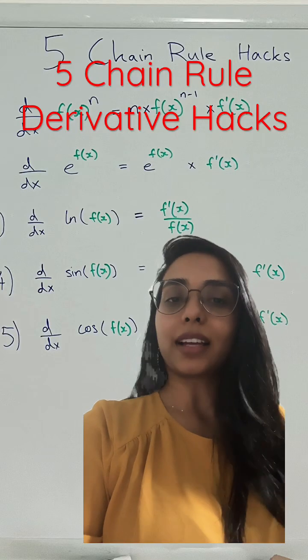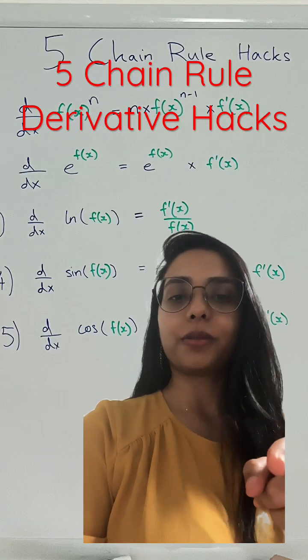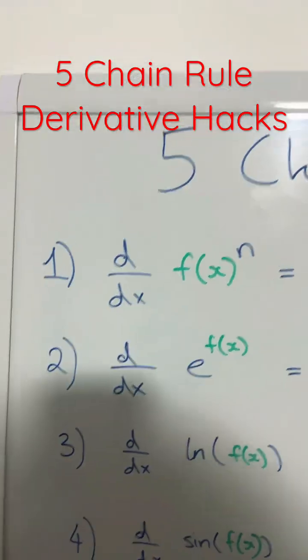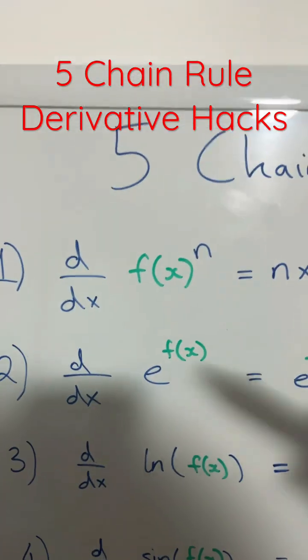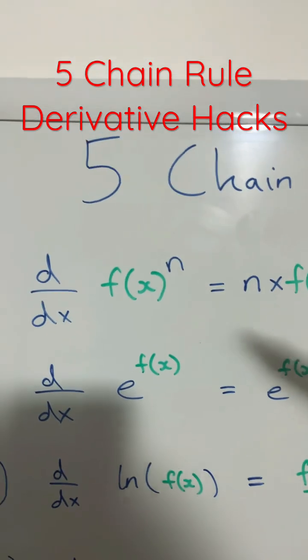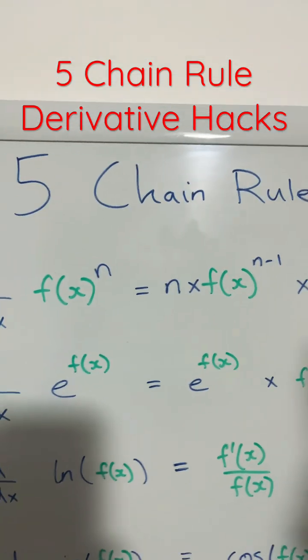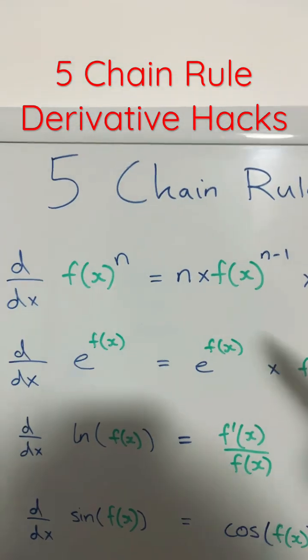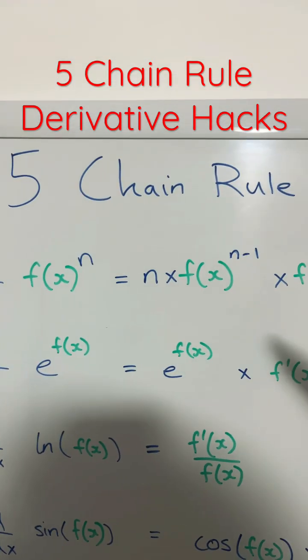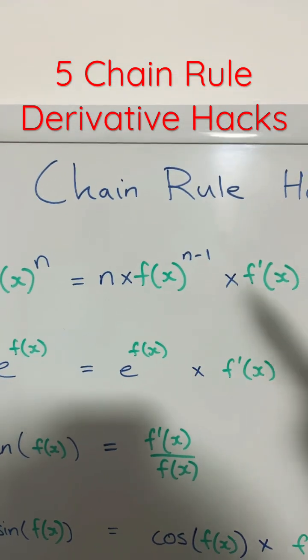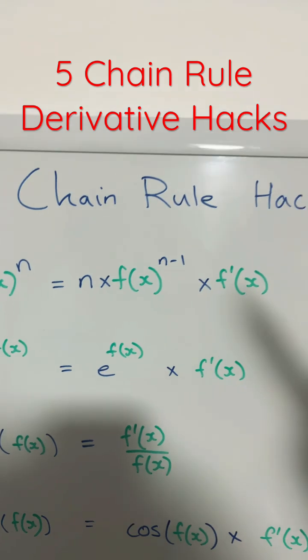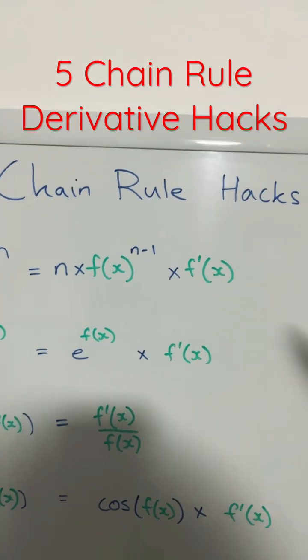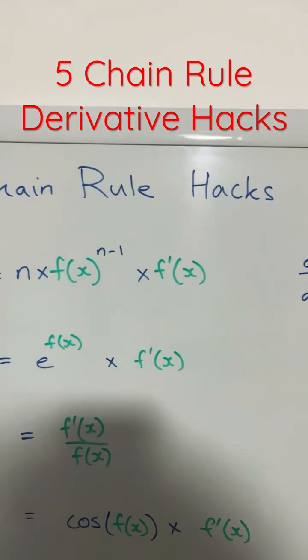The 5 channel hacks that you should know. Number 1: when deriving f of x to the power of n, the derivative is always n times f of x to the power of n minus 1, times the derivative of f of x.